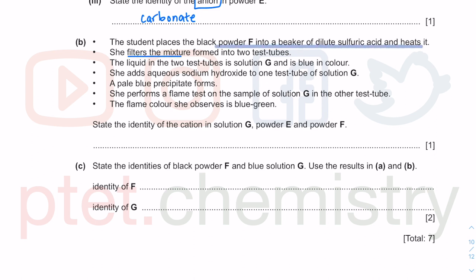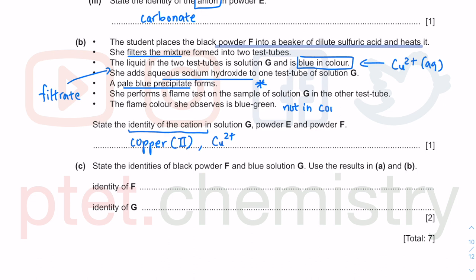The student places black powder F into a beaker of sulfuric acid and heats it. You filter the mixture. The liquid in the test tube is the filtrate—the liquid that passed through the filter paper. It's blue in color. This is an indication of copper 2 plus aqueous cations. What is the identity of the cations? It's not copper—copper is a metal. Copper 2+ as stated in the table of cations. When you add sodium hydroxide, you get pale blue precipitate. That is copper(II) hydroxide being formed.